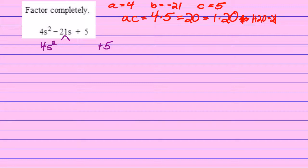Well, I know what else I can do, because positive 20 will equal negative 1 times negative 20. And negative 1 plus negative 20 equals negative 21, which is the number I need.